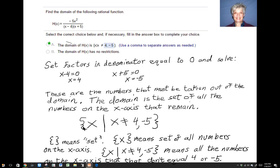So we have the set of all the numbers on the x-axis such that x doesn't equal 4 or negative 5. And that's what this means. This shows you've got a set. This shows you've got the set of all the numbers on the x-axis.